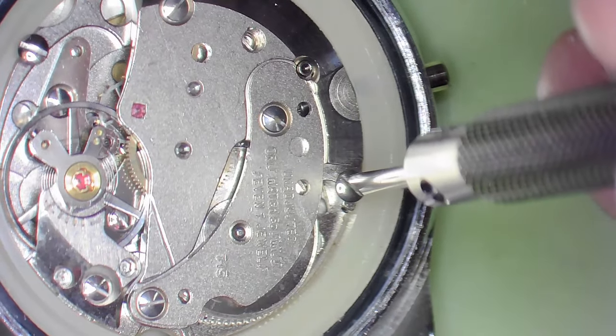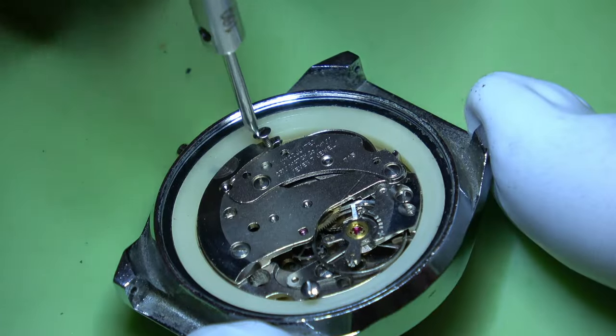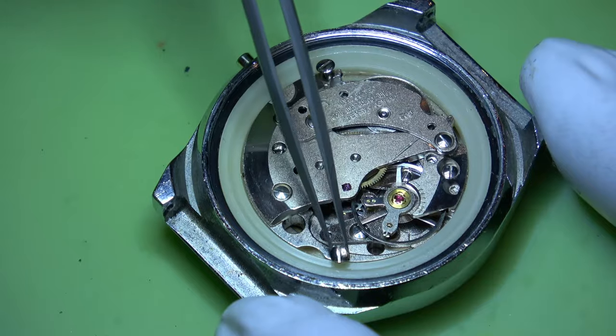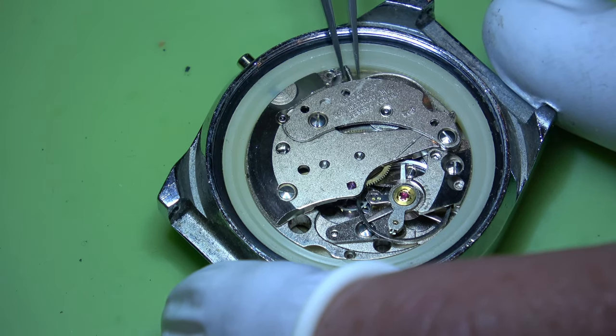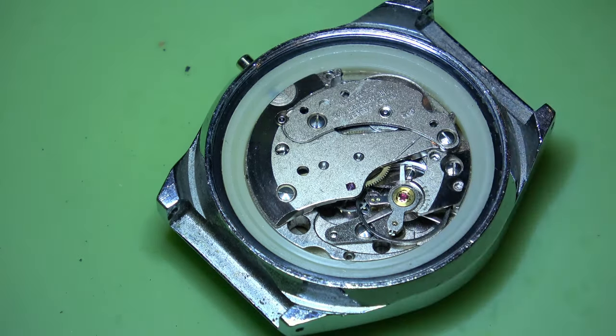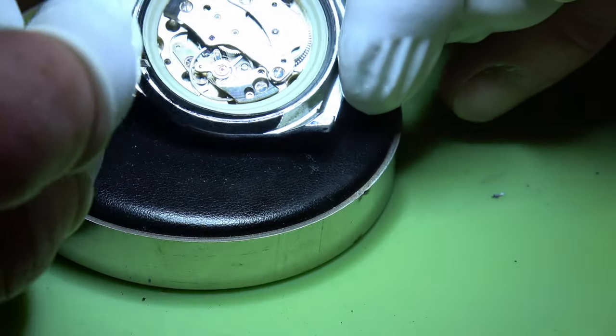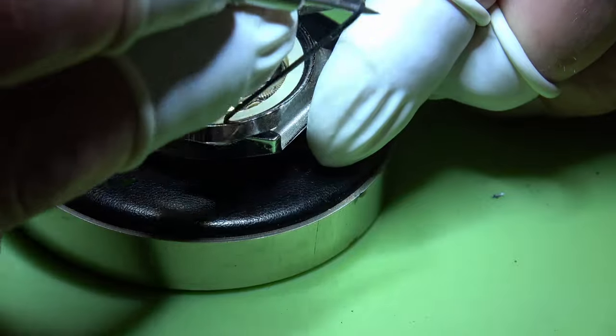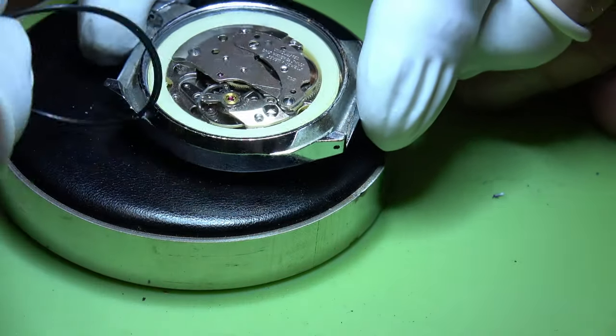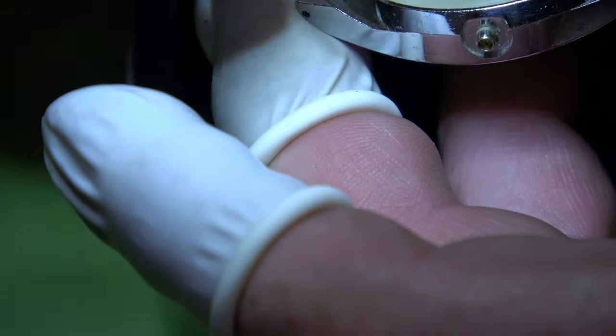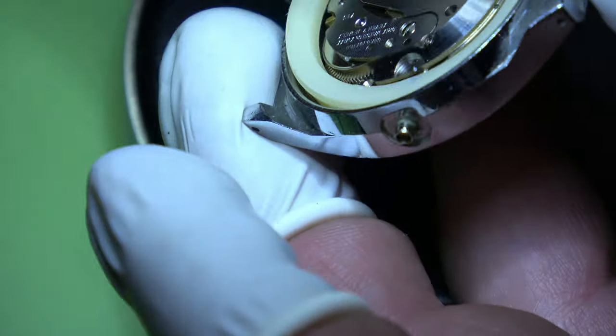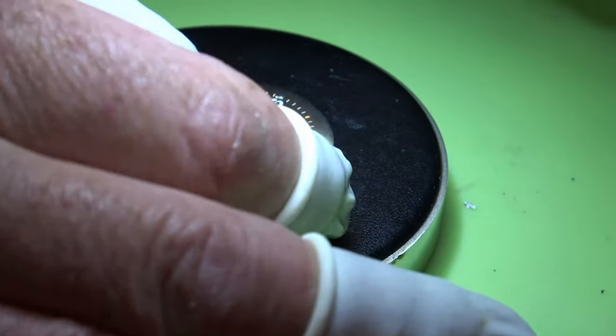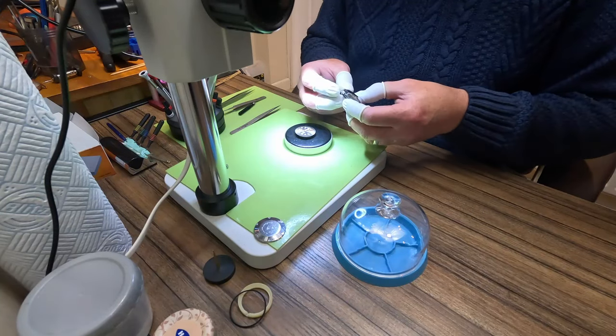First, we're going to take the movement out. To do that, there's these two retaining screws and that plastic ring. With those out, we can take out the rubber gasket, and then with a bit of persuasion we can take out this plastic ring that frees up the movement.